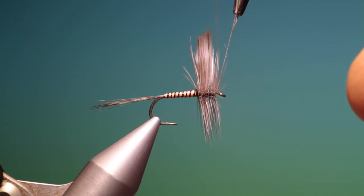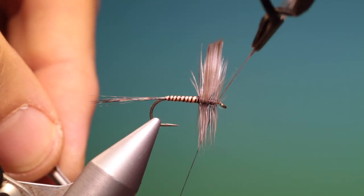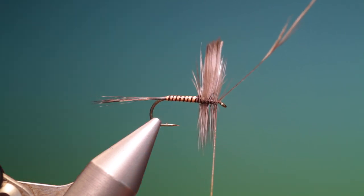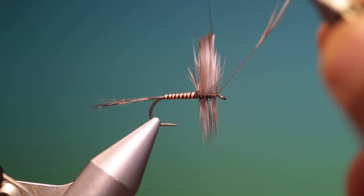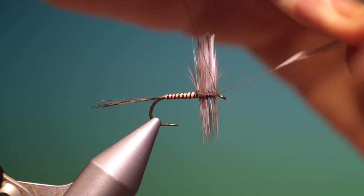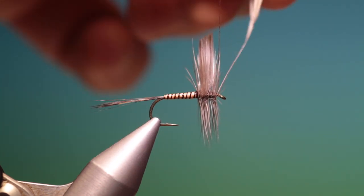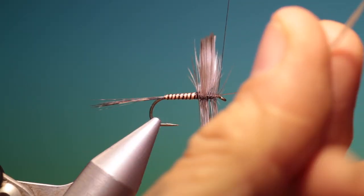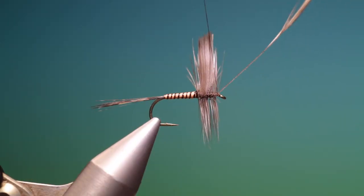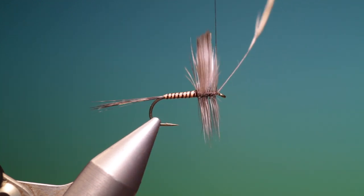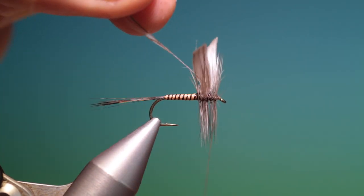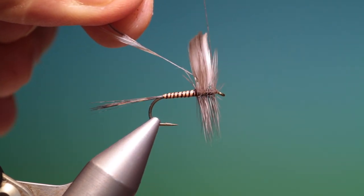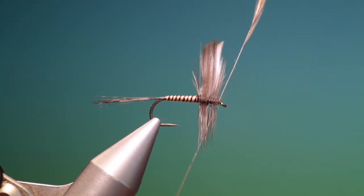Bring my tying thread up. Over the top. Release my hackle plier. What I want to do. Couple of turns. Three over the hackle. And then pull that back. Two or three turns. Just to secure it correctly.